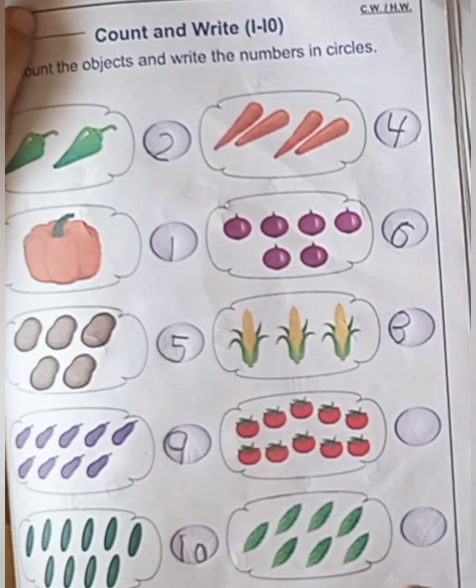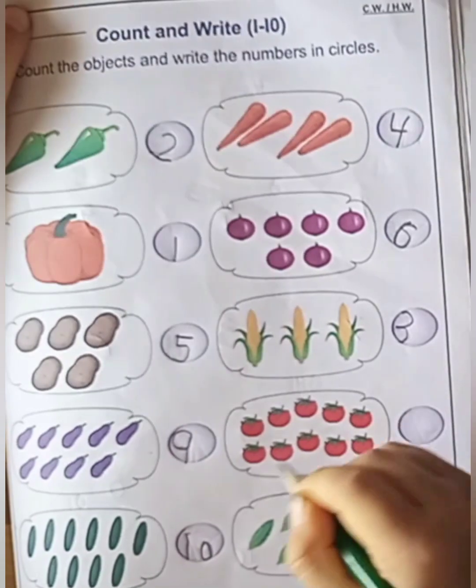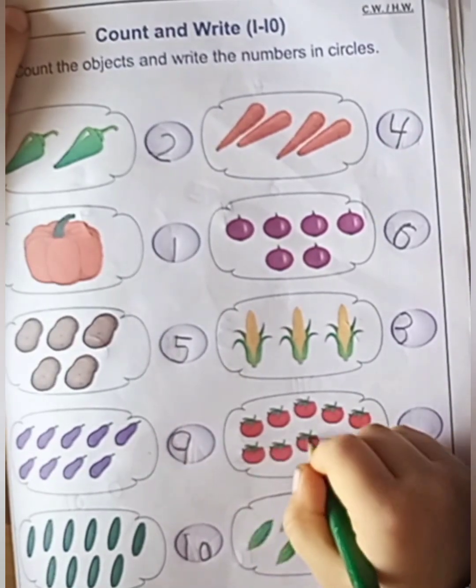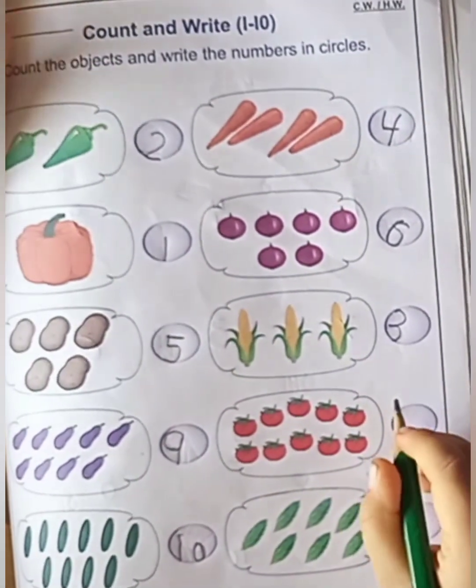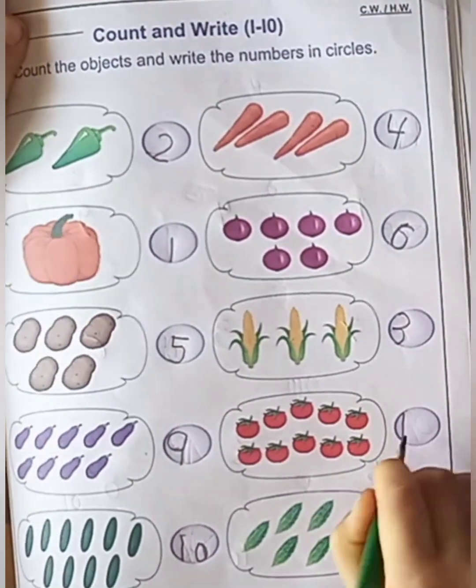Tomato. How many tomatoes are there? One, two, three, four, five, six, seven, eight, nine, ten. Very good. Ten tomatoes.